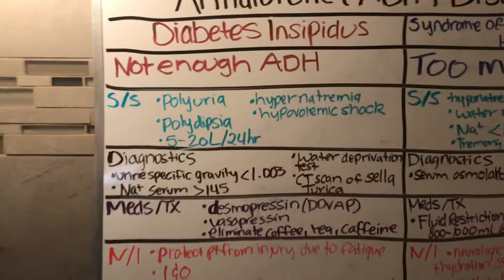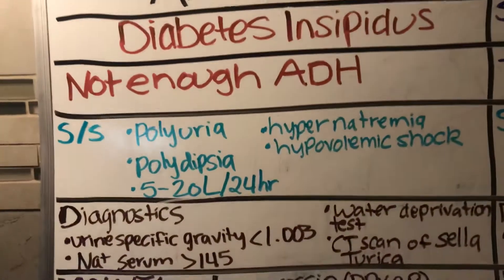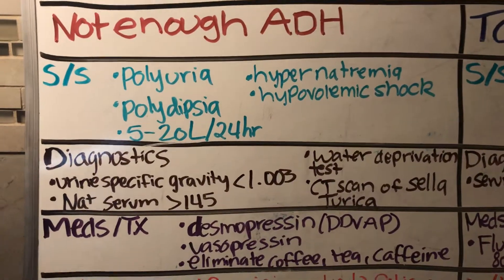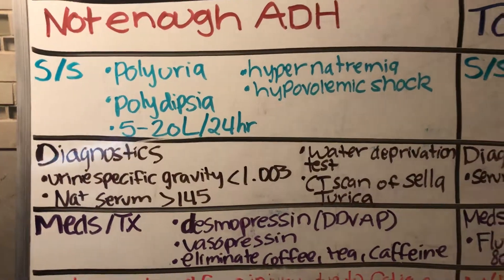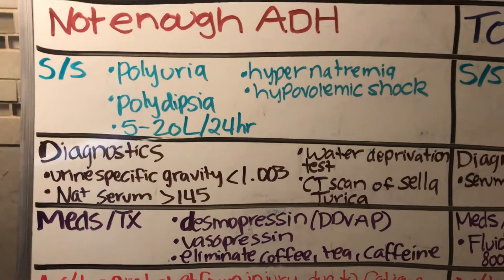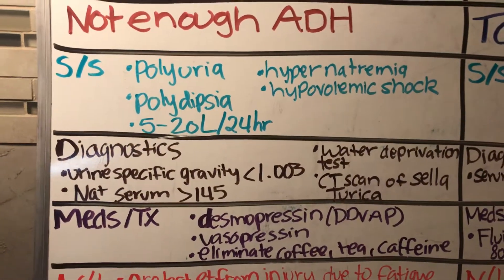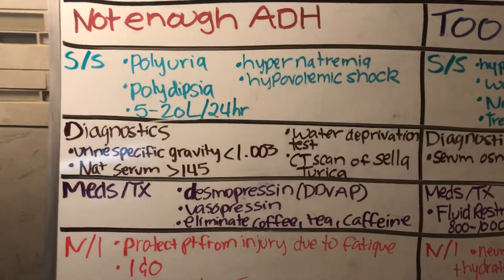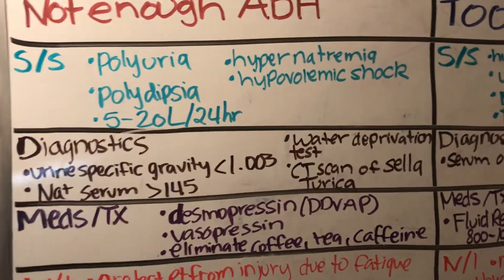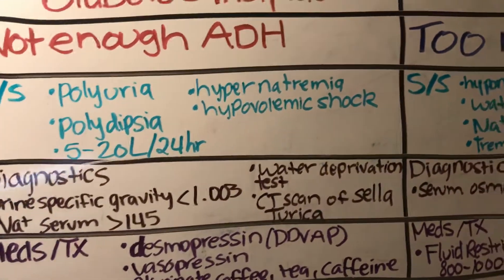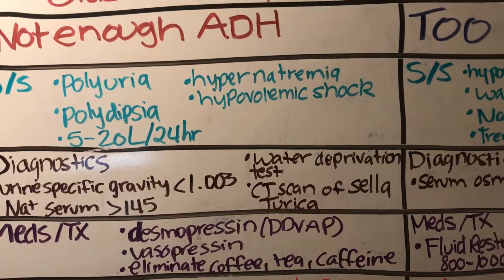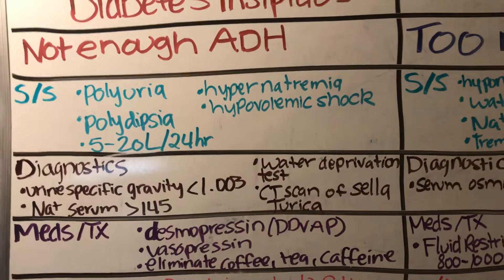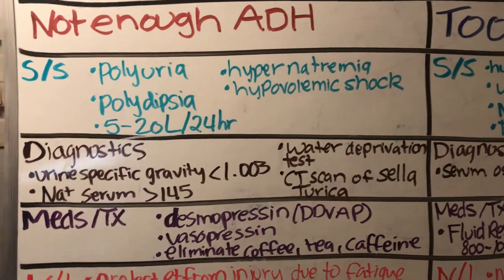Let's start with diabetes insipidus. This is not enough ADH. Signs and symptoms include polyuria — they're going to be urinating a lot — and because of that they're going to have excessive thirst, polydipsia. Urine output could be anywhere from 5 to 20 liters within 24 hours. They can show hypernatremia, which is high salt levels, and because of all of that they can go into hypovolemic shock.